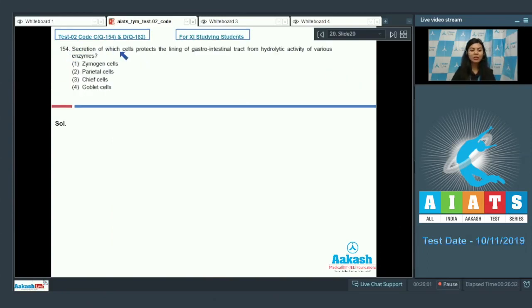Question 154: Secretion of which cells protects the lining of gastrointestinal tract from hydrolytic activity of various enzymes? Zymogen cells, parietal cells, chief cells, or goblet cells. The mucosal epithelium of the small and large intestine have various goblet cells, and they secrete mucus which helps in lubrication and prevents the lining from the hydrolytic activity of various enzymes. The right answer is goblet cells.